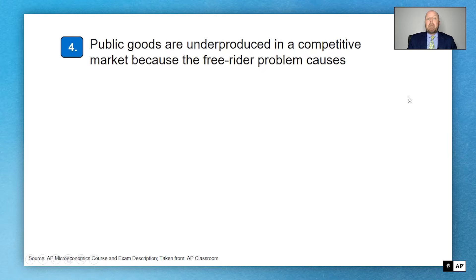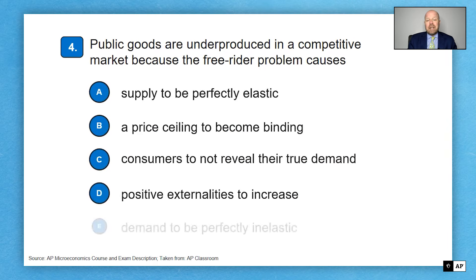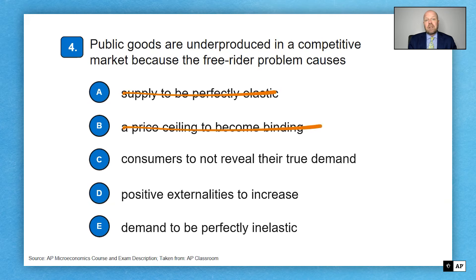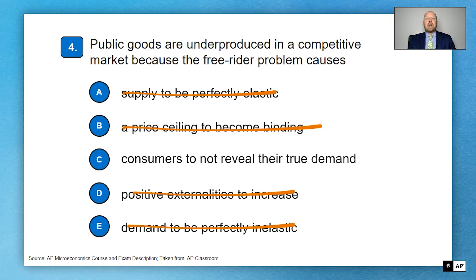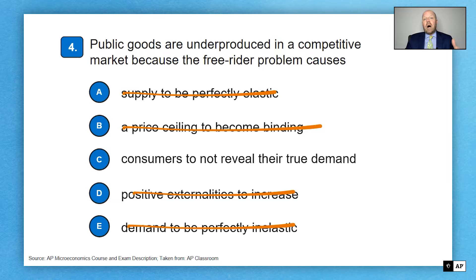The final question: public goods are underproduced in a competitive market because the free rider problem causes private firms to be unwilling to produce them. The question is why. Looking at the answers, you can eliminate supply being perfectly elastic, a price ceiling becoming binding, positive externalities, and demand being perfectly inelastic — leaving answer C.